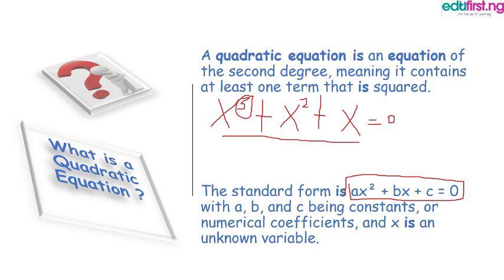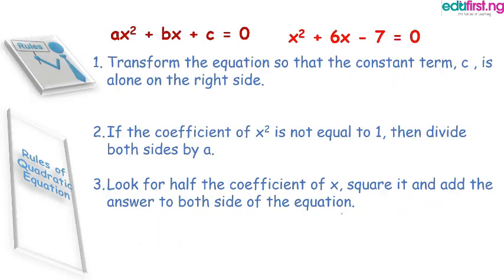So in a way we understand and can identify a quadratic equation. There are also rules of solving quadratic equations by using completing the square method. You need to understand the rules because most times they may say you must solve it with completing the square, not factorization, not graphical, not formula method. What do we do?